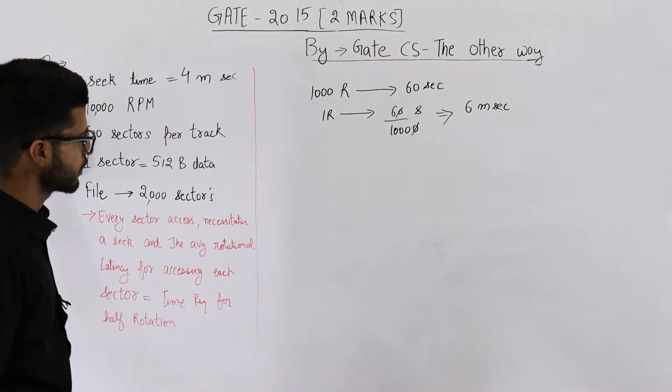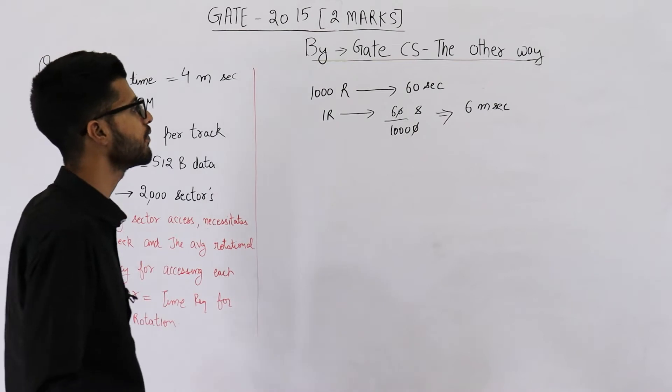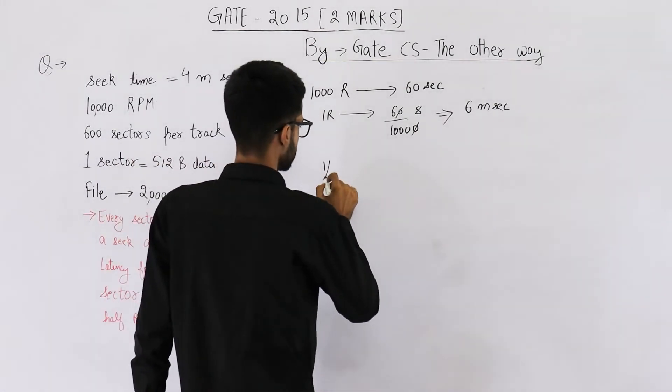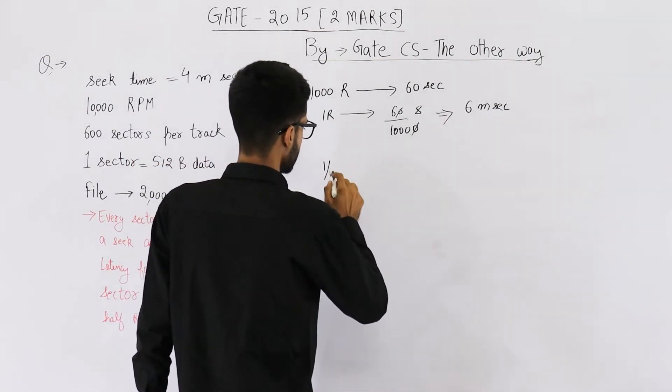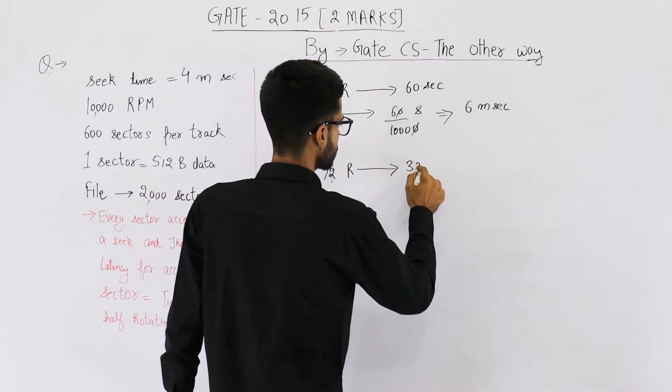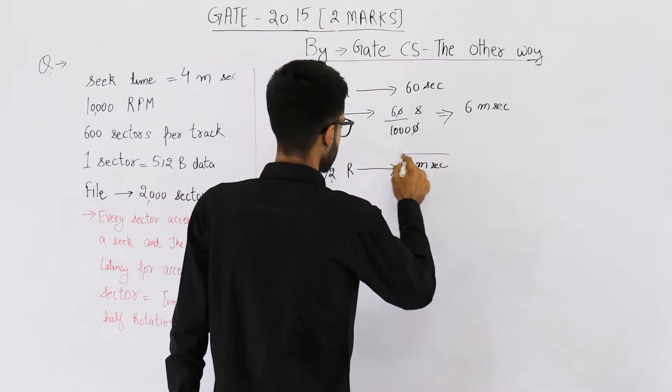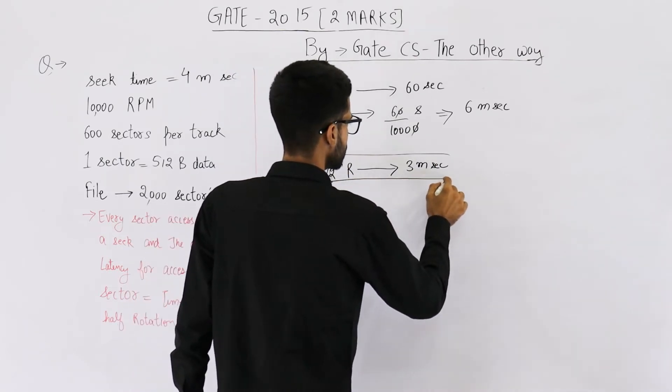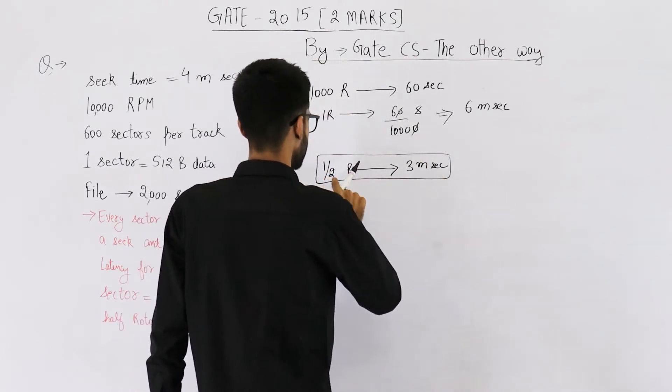Now one rotation requires 6 milliseconds. Half rotation will require 3 milliseconds. So this is your rotational delay.